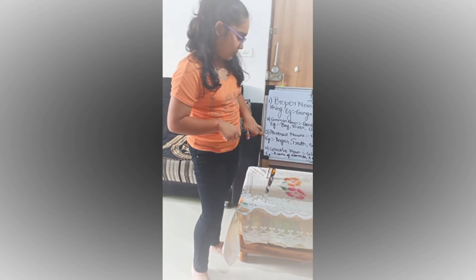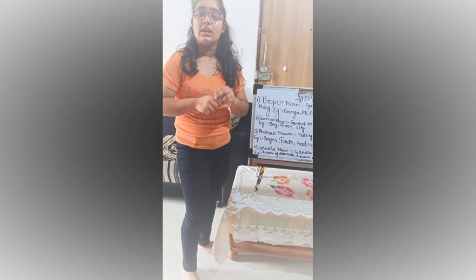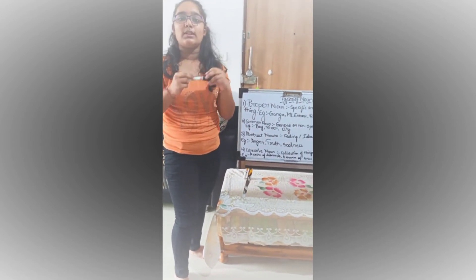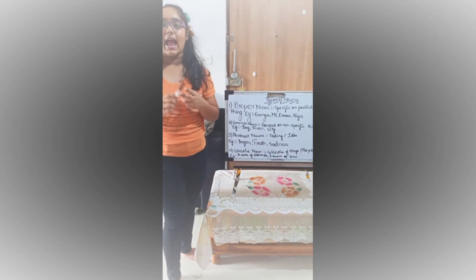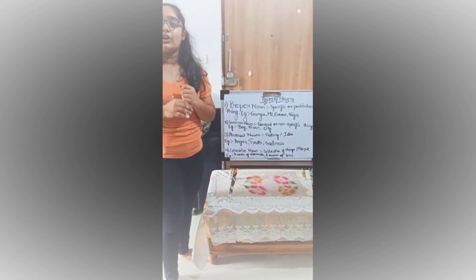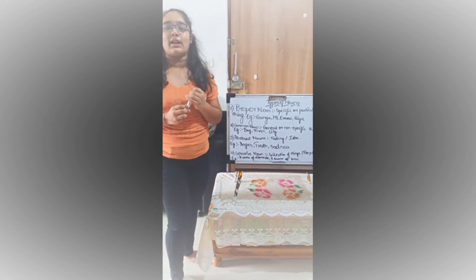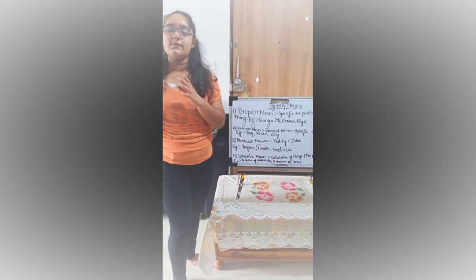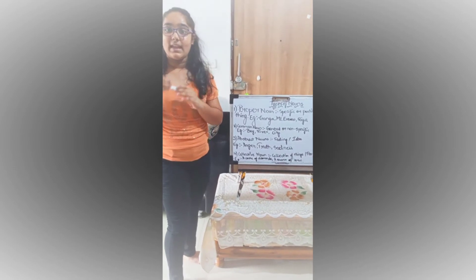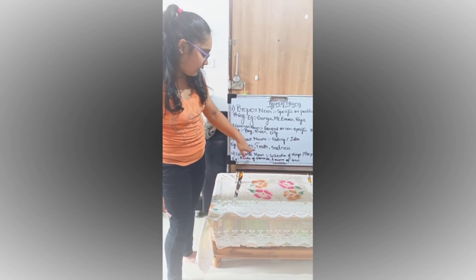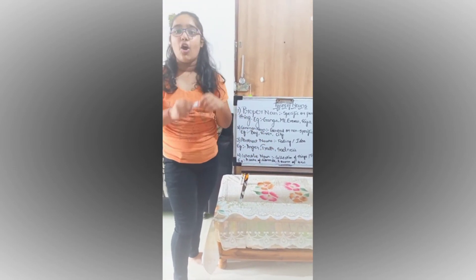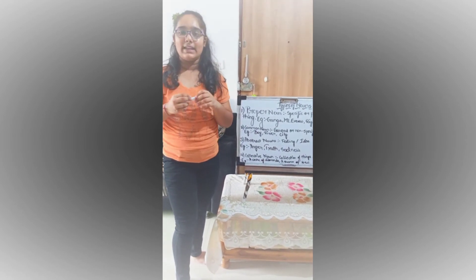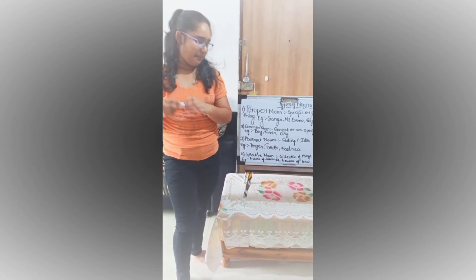Next we'll look at abstract nouns. An abstract noun refers to a feeling, idea or opinion. We cannot touch abstract nouns but just feel them. Example: anger, truth, sadness — all of these feelings we cannot touch them but we can feel them.